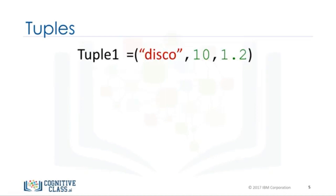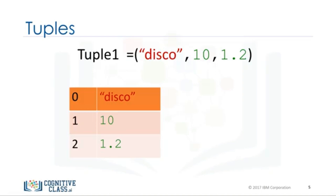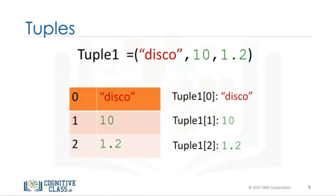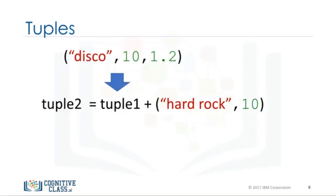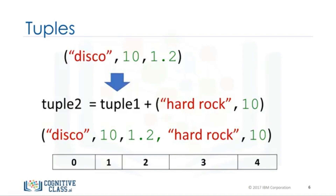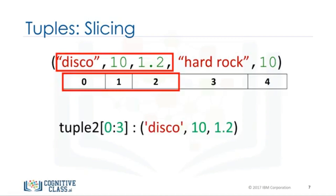The following table represents the relationship between the index and the elements in the tuple. The first element can be accessed by the name of the tuple followed by a square bracket with the index number — in this case, zero. We can access the second element as follows. We can also access the last element. In Python, we can use a negative index. We can concatenate or combine tuples by adding them. If we would like multiple elements from a tuple, we can also slice tuples. For example, if we want the first three elements, we use the following command. The last index is one larger than the index you want.